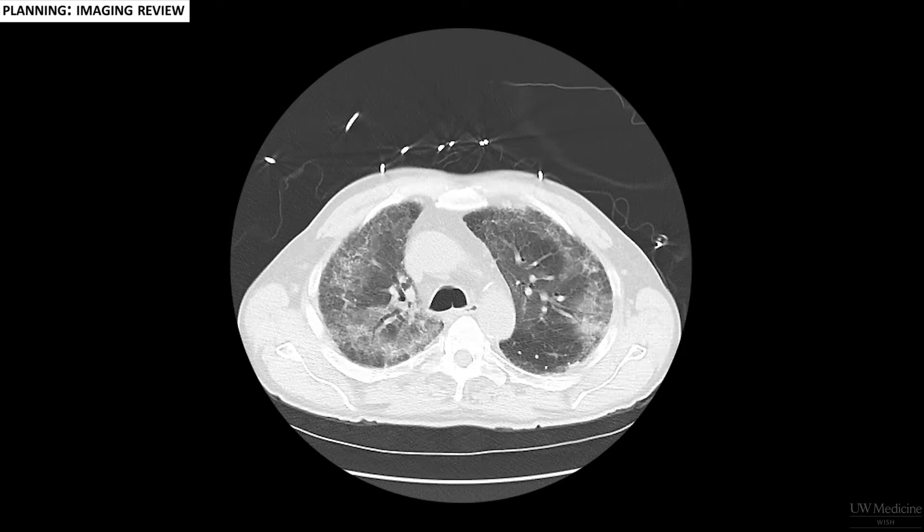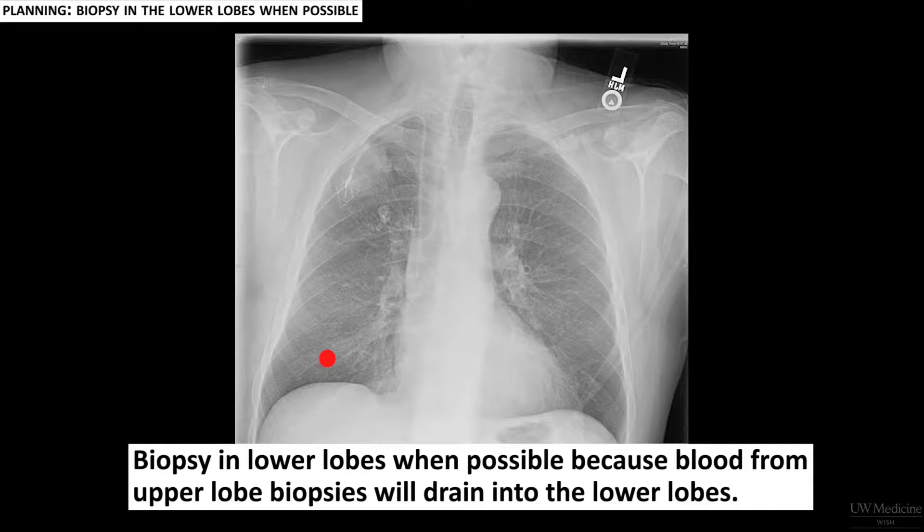Firstly, when we biopsy in the lower lobes, gravity helps to keep any blood in the biopsy segment. Whereas when we biopsy in the upper lobes, blood can drain into the rest of the lung much more easily.